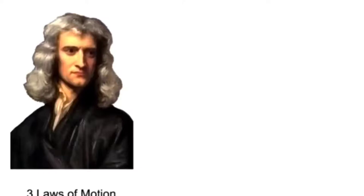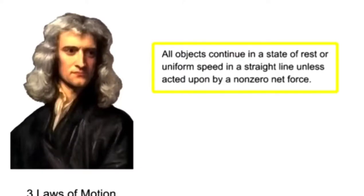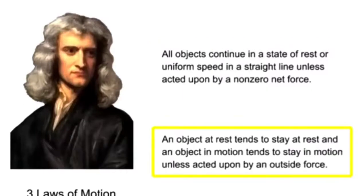Newton's first law of motion states that all objects continue in a state of rest or uniform speed in a straight line unless acted upon by a non-zero net force. In other words, an object at rest tends to stay at rest and an object in motion tends to stay in motion unless acted upon by an outside force.